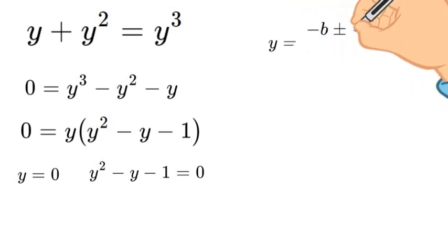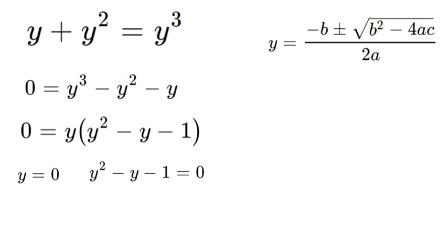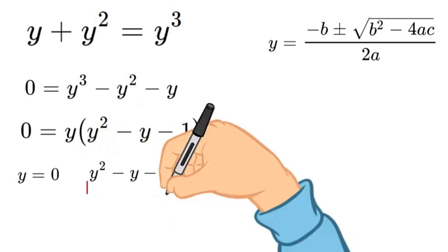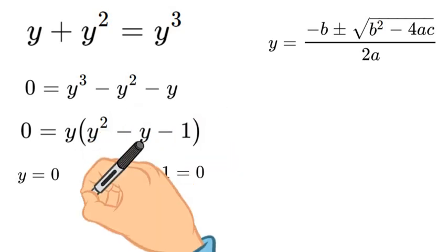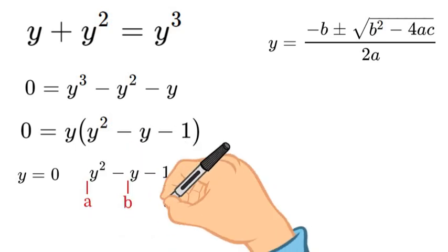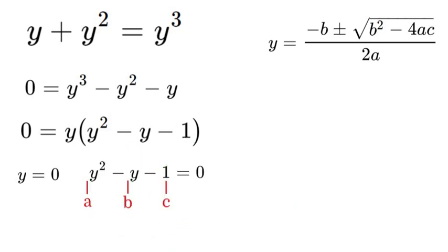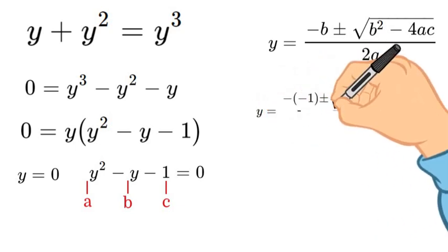So we have y equals negative b plus or minus the square root of b squared minus 4ac over 2a. Now in this equation, a would be in front of our y squared, b would be in front of our negative y, and c would be our negative 1. So a is 1, b is negative 1, and c is negative 1.